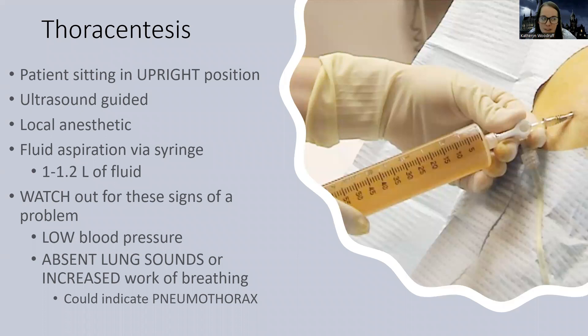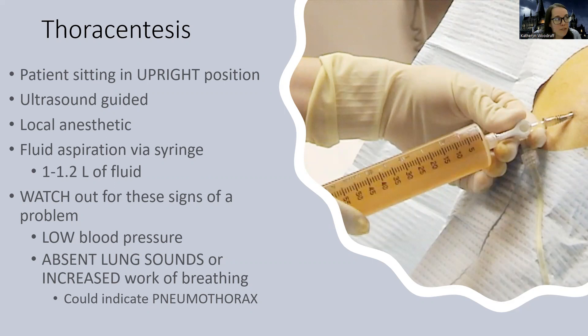They'll drain the fluid — it should be a serous color. The patient gets local anesthetic and may feel pressure, but it's not usually painful. We don't take a lot of fluid from the lungs — unlike paracentesis where I've seen up to 23 liters removed from the abdomen, with thoracentesis we're usually taking about a liter, maybe a little over, drawn via syringe.